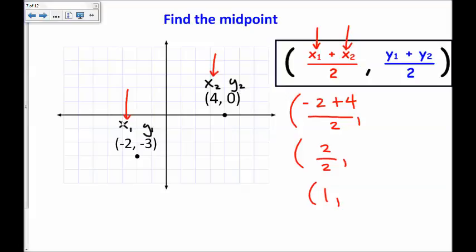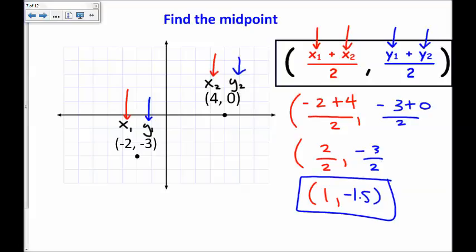Now, for the y's, it's y1 plus y2. This is y1, this is y2. So, negative 3 plus 0 over 2. Negative 3 plus 0 is negative 3 divided by 2. And negative 3 divided by 2 is negative 1.5. This is the midpoint, which is 1, negative 1.5, or right here.